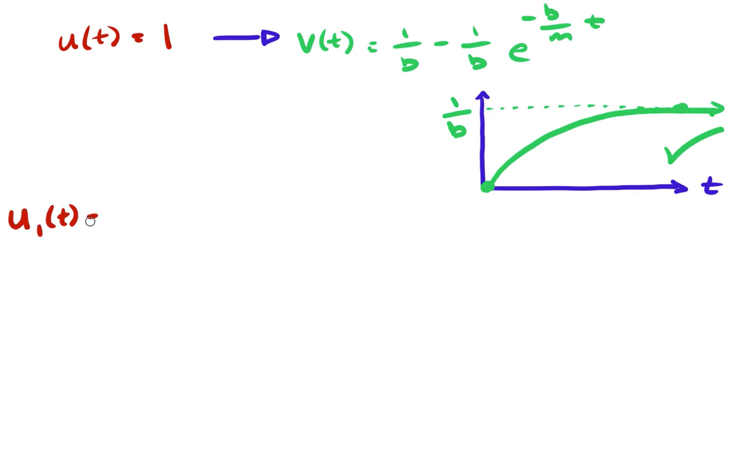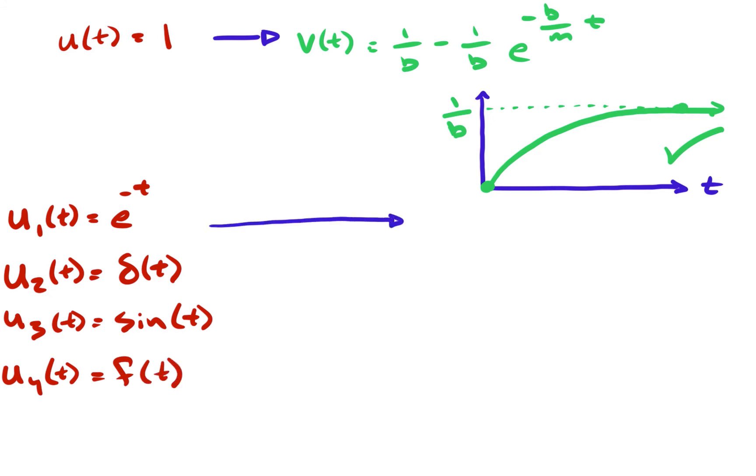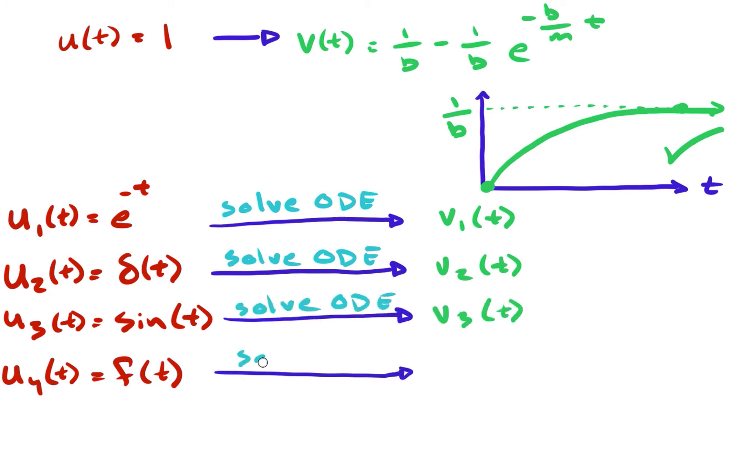Now suppose the input is something else, like an exponential function, or a unit impulse function, a sinusoidal function, or any other arbitrary function of time. In order to compute the velocity, you would then need to solve the differential equation for each one of those different inputs.